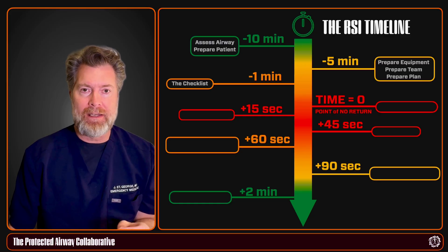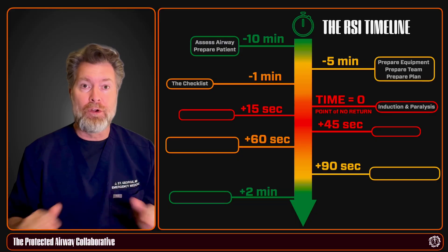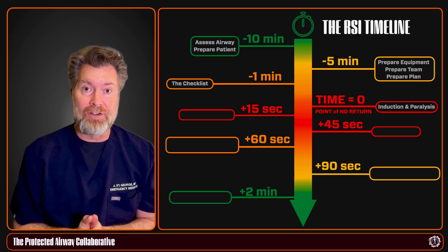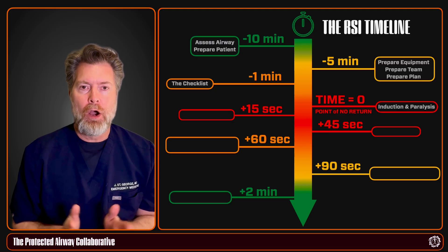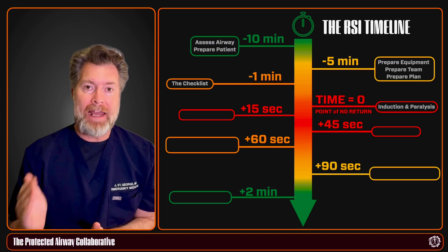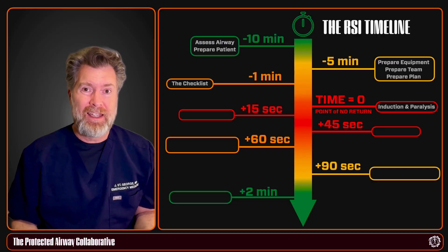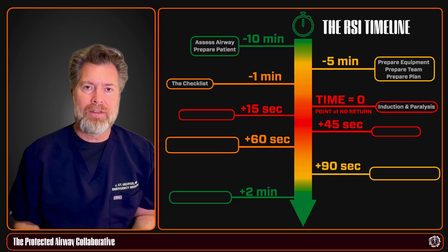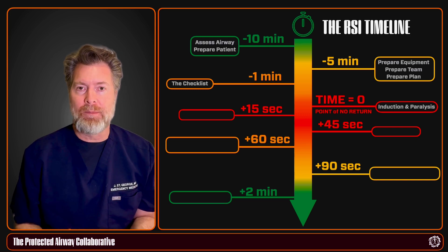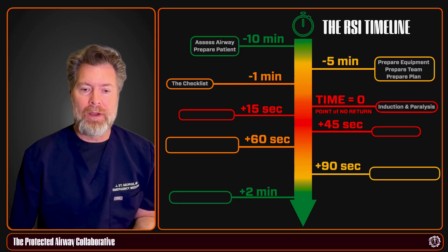Once everyone agrees you're ready, go ahead and do the induction and paralysis with a sedative and a paralytic. At this point you've reached the point of no return — the patient is no longer going to be breathing on their own, and you must be 100% ready to oxygenate and ventilate by any means necessary. If you've performed appropriate pre-oxygenation, their O2 sat should stay close to 100%, giving you time to let the medications work. That takes about 45 seconds — if you're nervous, take a deep breath and give yourself positive reinforcement. As that 45-second mark approaches and the patient is relaxed with optimal intubating conditions achieved, remove the non-rebreather, position the patient appropriately, and deliver the tube.